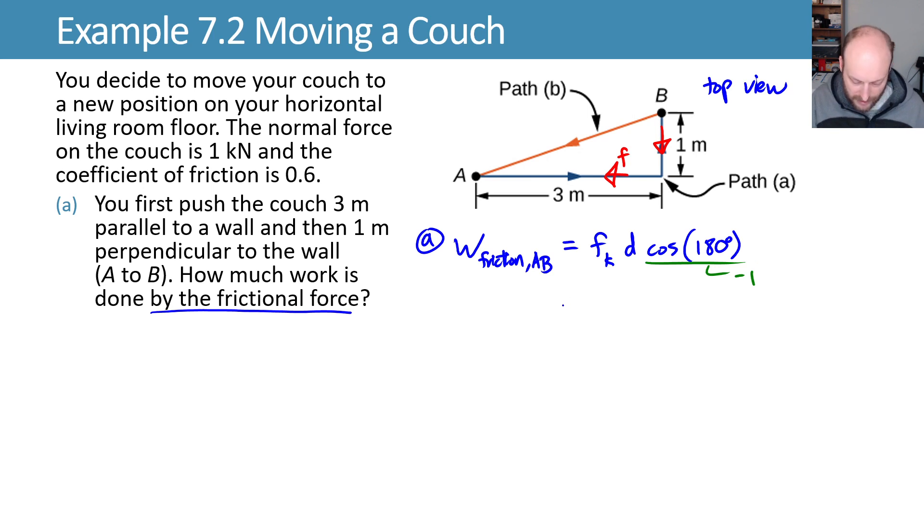We can now substitute in what we know for kinetic friction. It's equal to mu K N. And substitute in now the values for these properties: 0.6 for our mu K, N is our normal force which is 1 kilonewton, and D is our distance.